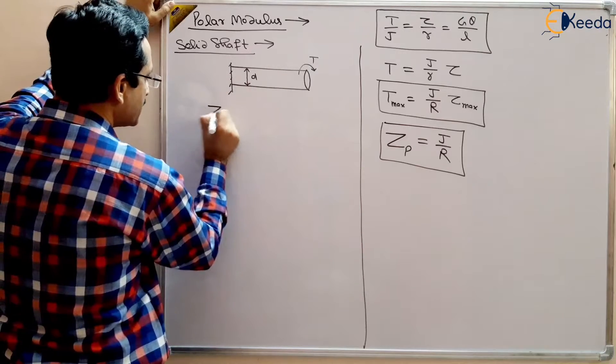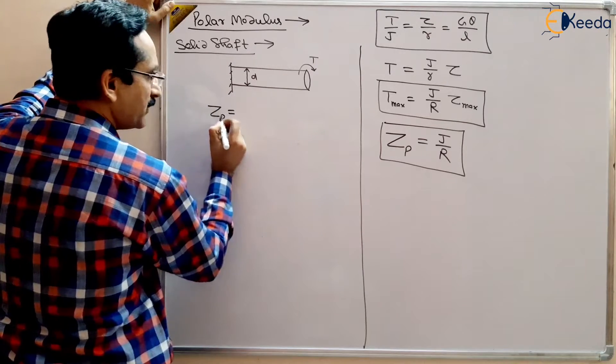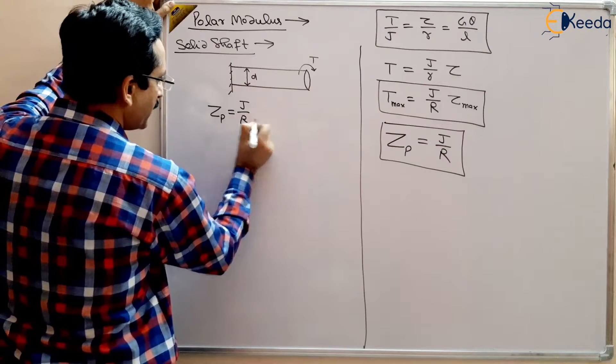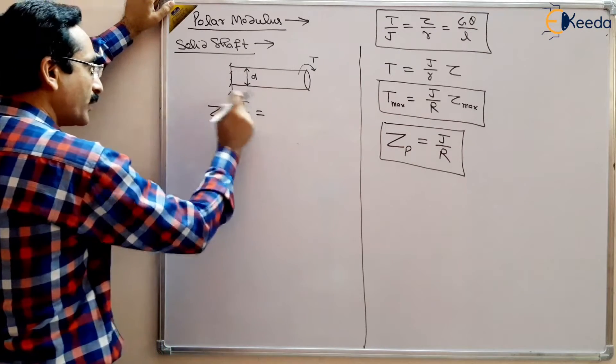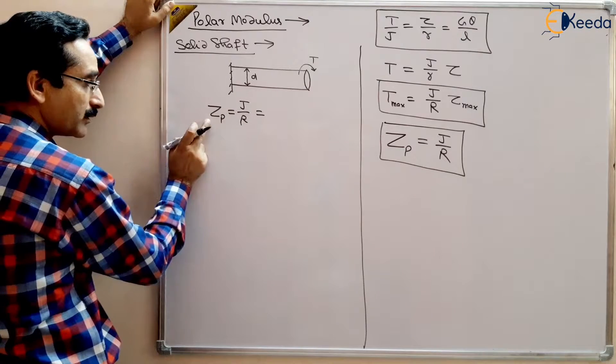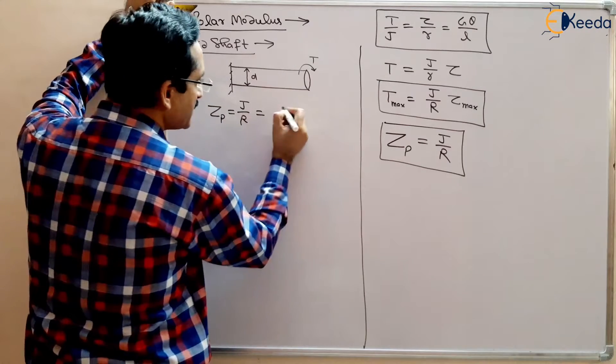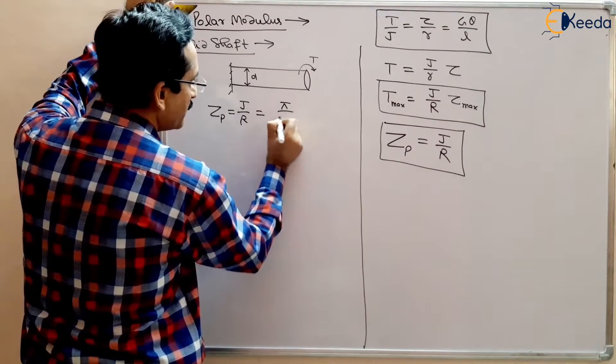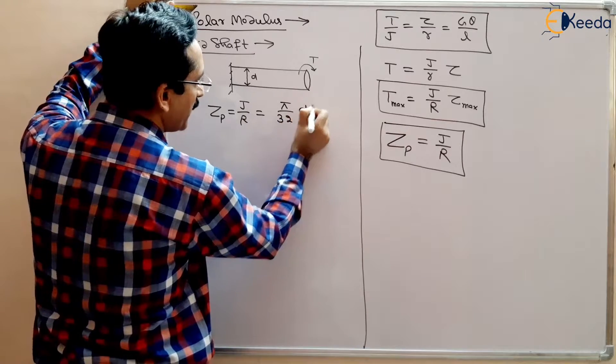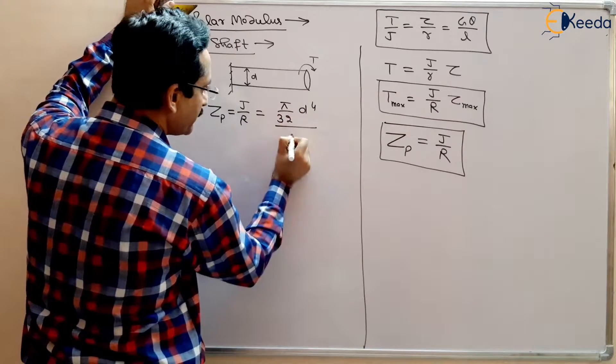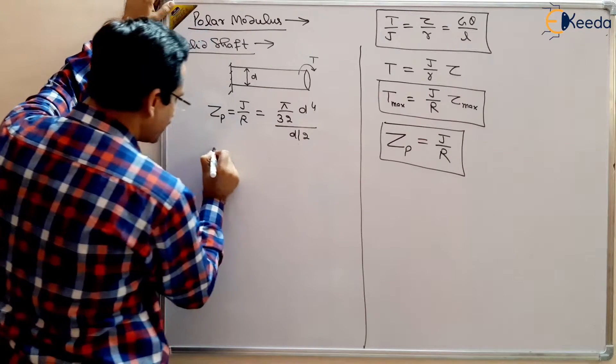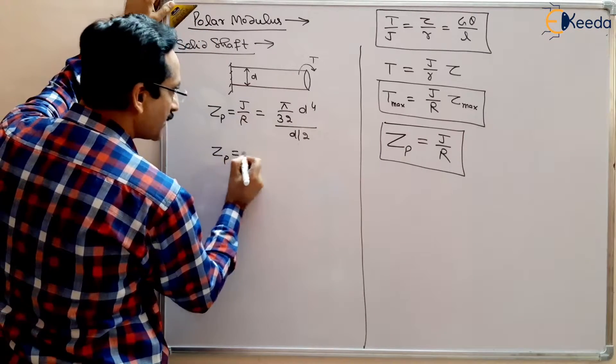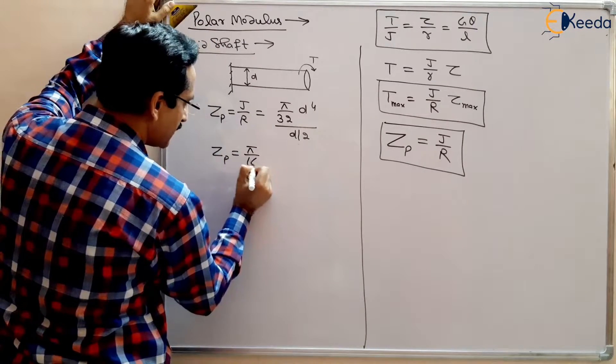So Polar Modulus for this shaft is ZP will be equal to J by R and you know the Polar Moment of Inertia, this is Polar Moment of Inertia and this is Polar Modulus. So Polar Moment of Inertia for solid shaft is pi by 32 d to the power 4 divided by d by 2. So ZP will be equal to pi by 16 d cube.